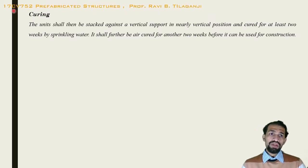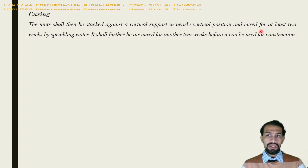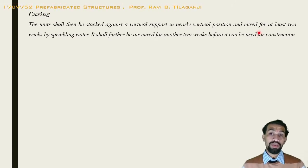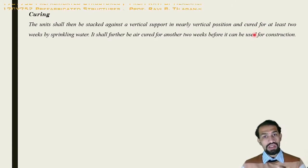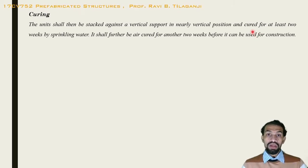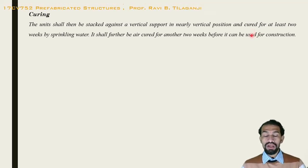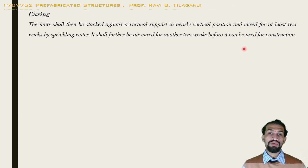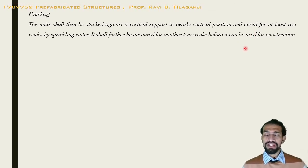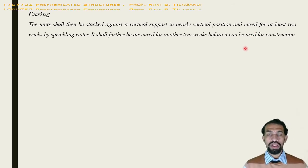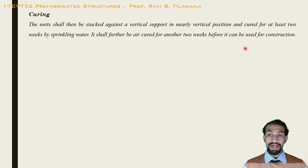The curing units shall be stacked against a vertical support in a nearly vertical position and cured for at least two weeks by sprinkling water — not pouring. They shall be further air-cured for another two weeks before being used in construction. Design checks or tests on these elements can also be conducted.